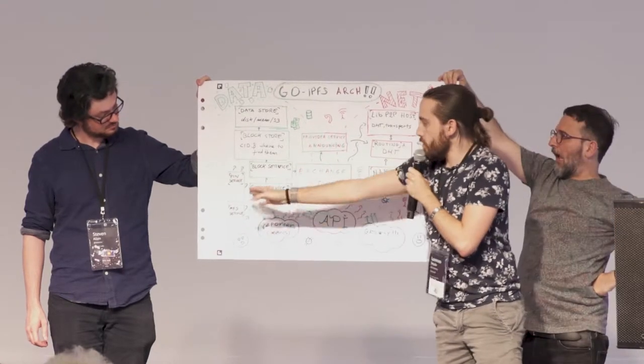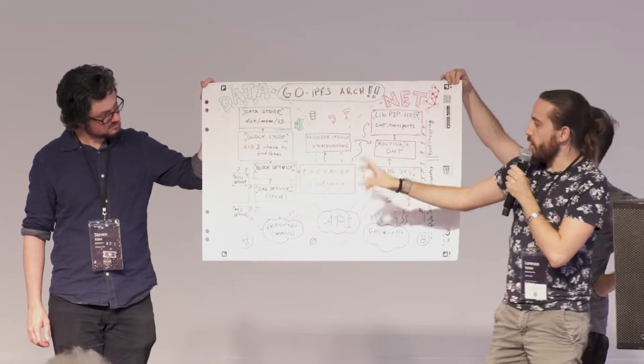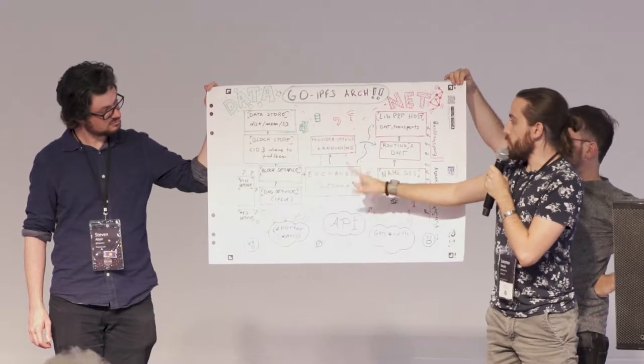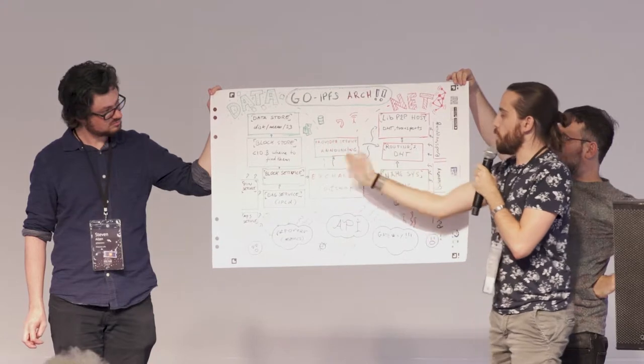We have a bunch of other services, like the pinning service and the MFS service. How does that data get sent to the rest of the network? We use the exchange service, which is bitswap. It basically talks between the two parts.